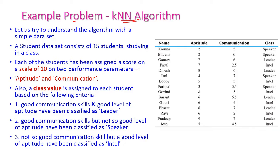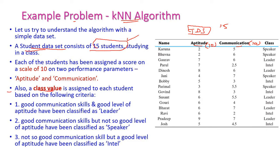Let us look at a simple example using the student data set. There are 15 student records where aptitude and communication levels were tested, with marks assigned out of 10. A class value is assigned to each student based on their communication and aptitude marks.